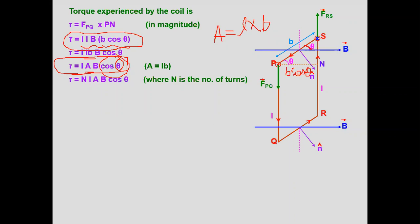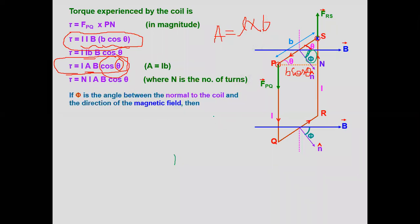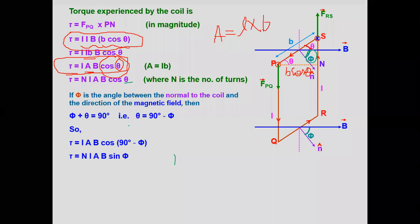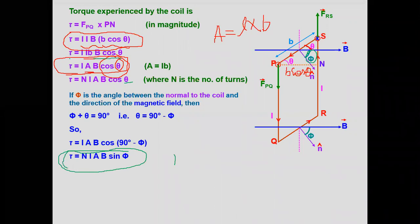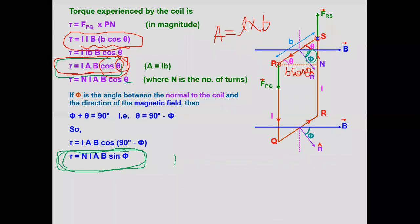This is the normal to the coil. When you measure the angle from the normal, that angle is called φ. There is a relation: θ and φ together form 90 degrees. So you can substitute θ = 90° − φ. The equation can be written in terms of φ as well. In questions, pay close attention to whether the angle given is from the normal to the coil or from the plane.